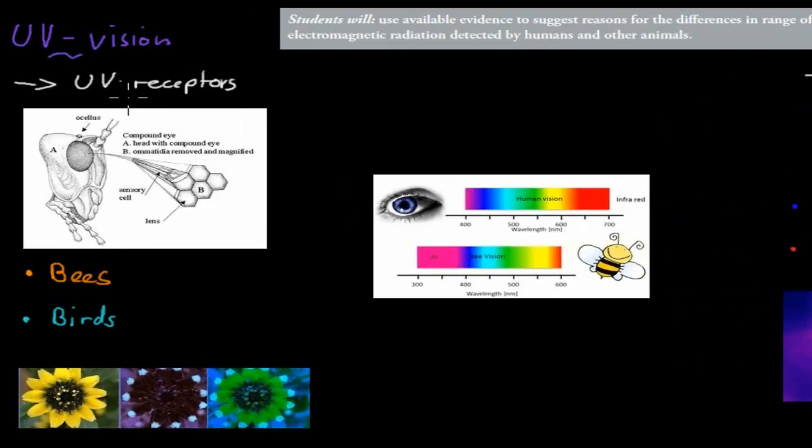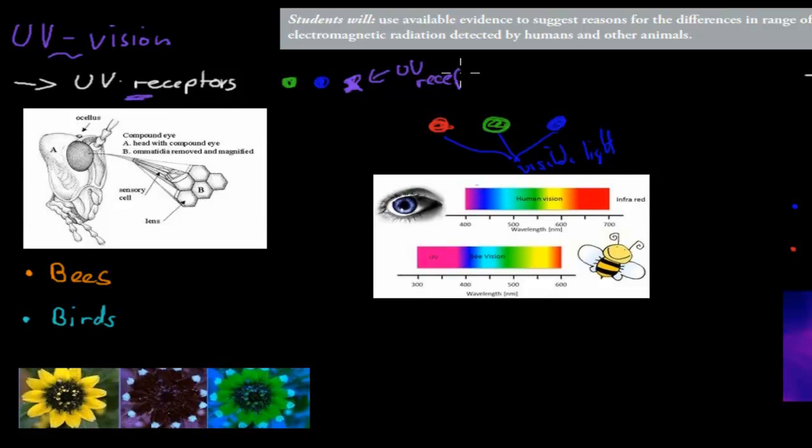UV vision comes because of UV receptors. Remember how we have cones? Cones are our photoreceptors. We have a green cone, a red cone, and a blue cone. These combined give us our visible light spectrum at 380 to about 700 nanometers. Now these insects might have some of these cones, so they can see some color vision. But on top of that, they might have a different kind of receptor called the UV receptor. Most insects have these UV receptors in the eye. Bees have pretty well-defined UV vision, and birds also have really good UV vision.